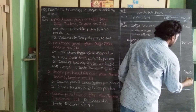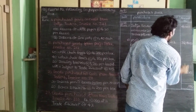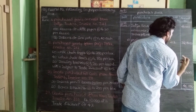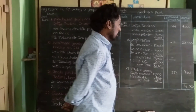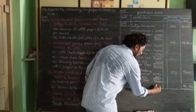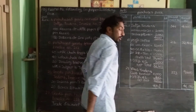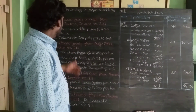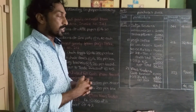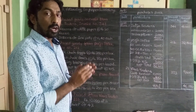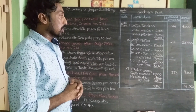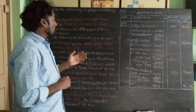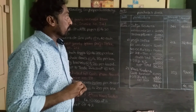So in total, the total of the purchase book — that means goods purchased on credit — the total goods purchased on credit in the month of June, after subtracting the trade discount, is ₹46,000. This is the answer of the purchase book.